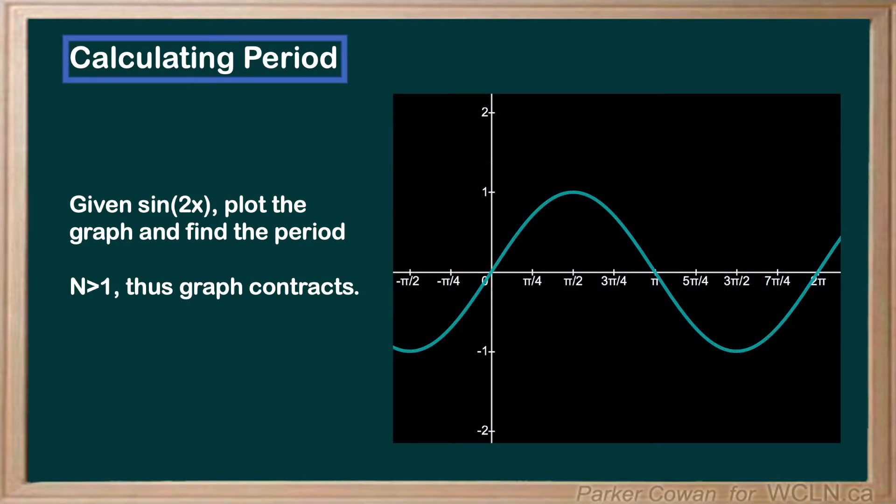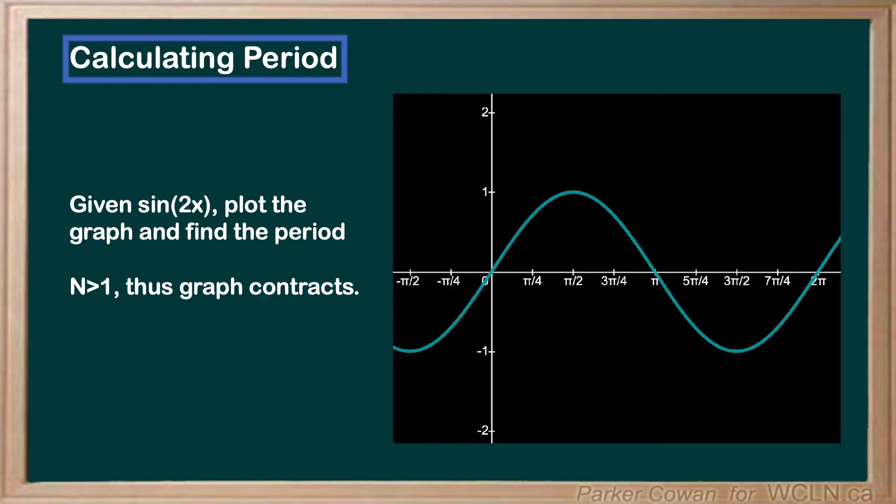I find it easiest to first draw the regular sine wave and then divide the main values by 2. This is going to give us a wave that looks like this.